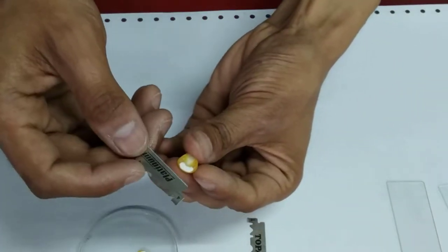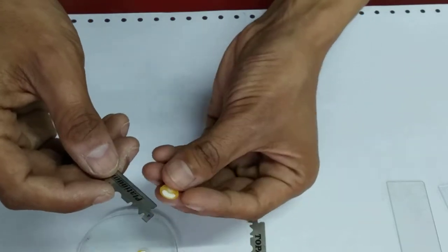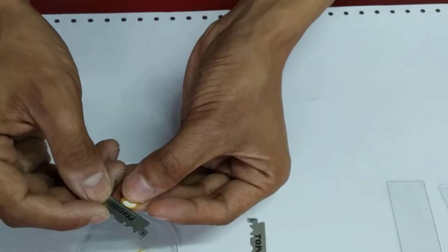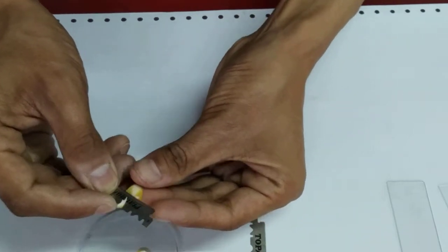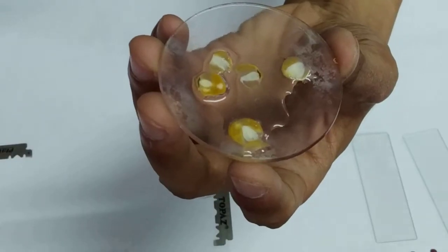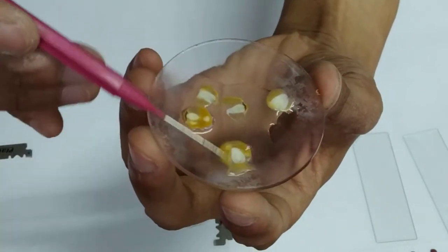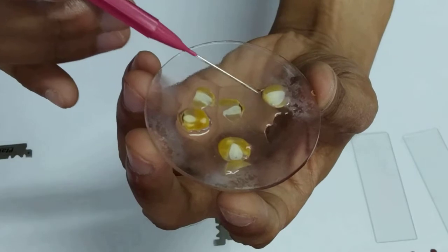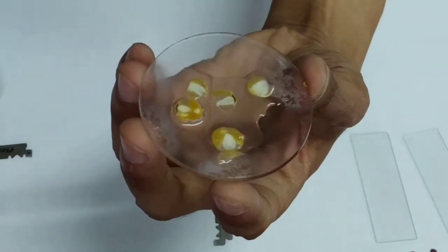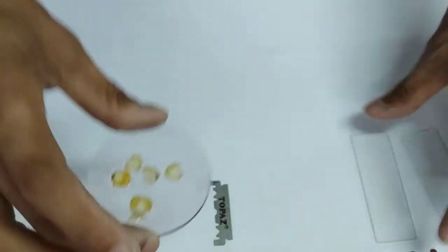We are going to cut many such sections and then we are going to select the thinnest one. So the thinnest one seems like this one. We are going to transfer this to a glass slide with the help of a brush.